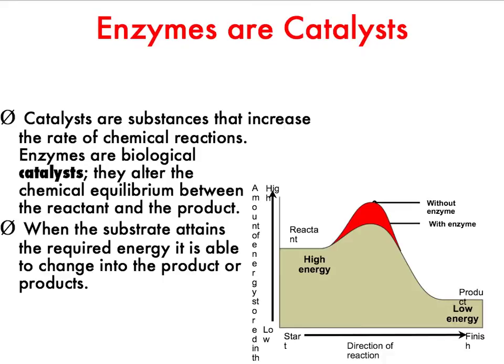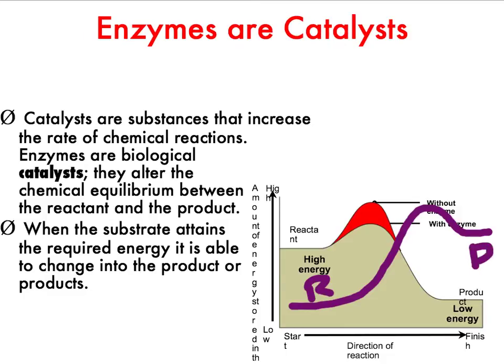The way enzymes lower activation energy is by putting substrates in position. For a catabolic reaction, the enzyme stresses the bonds in those molecules, making those bonds very hard to maintain. Think of pulling two magnets apart — they're still stuck together but if you pull hard enough they separate. That's what we're doing: breaking bonds in catabolic reactions, or forming them in anabolic reactions, where the energy diagram looks quite different.